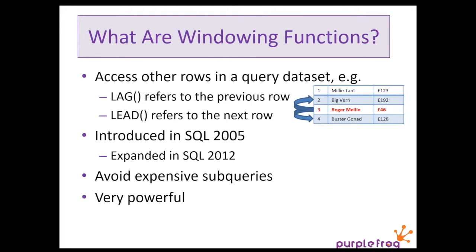We don't have long, so we're going to skip through. Basically, in normal T-SQL — historical T-SQL — each calculation in a row can refer to other data in that same row. So, this field plus that field, but in the same row of data. Windowing functions allow you to expand that and refer to fields in other rows of the same query. For example, the lag function lets you refer to the previous row and use that in conjunction with the current row in the same calculation. Lead, the opposite, refers to the following row.